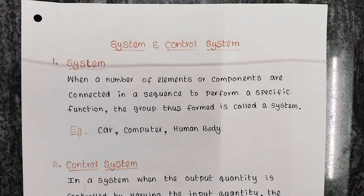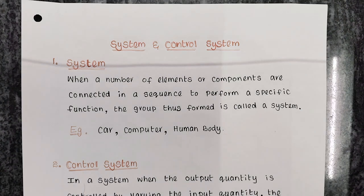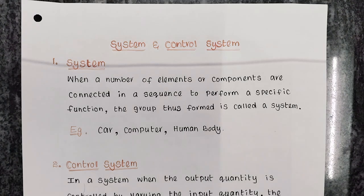System and control system. First, we see what is a system. When a number of elements or components are connected in a sequence to perform a specific function, the group thus formed is called a system.